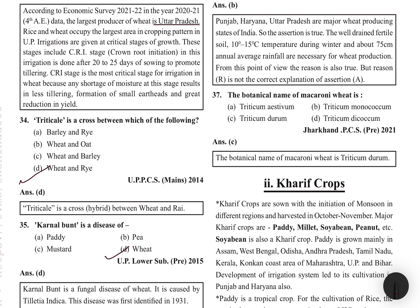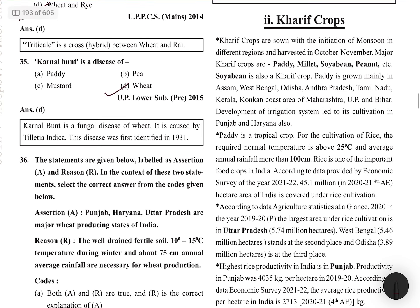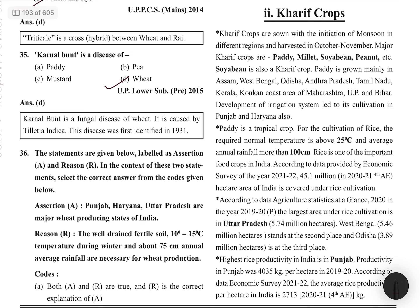The botanical name of macaroni wheat is Triticum durum. This concludes the Rabi crops questions. Next, we will start with Kharif crops in the next video. Keep revising, keep studying — Jai Hind, Jai Bharat.